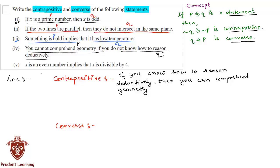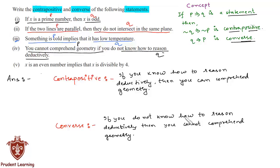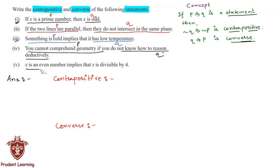The converse of the fourth statement is: if you do not know how to reason deductively, then you cannot comprehend geometry. The fifth statement is: x is an even number implies that x is divisible by 4. The contrapositive is: if x is not divisible by 4, then x is not an even number.